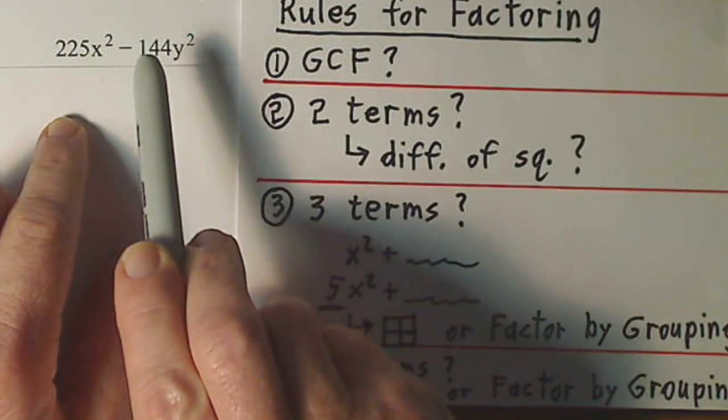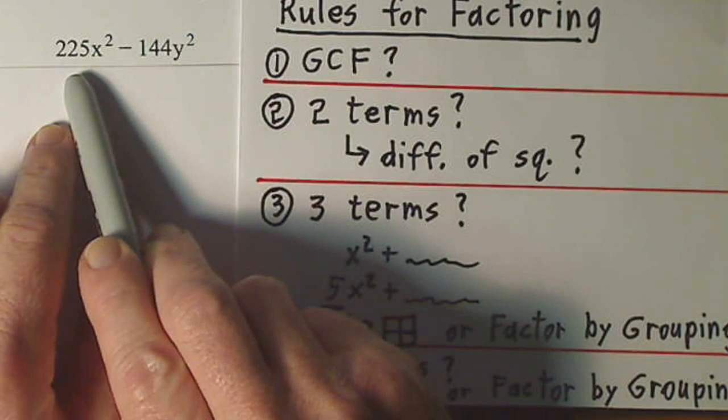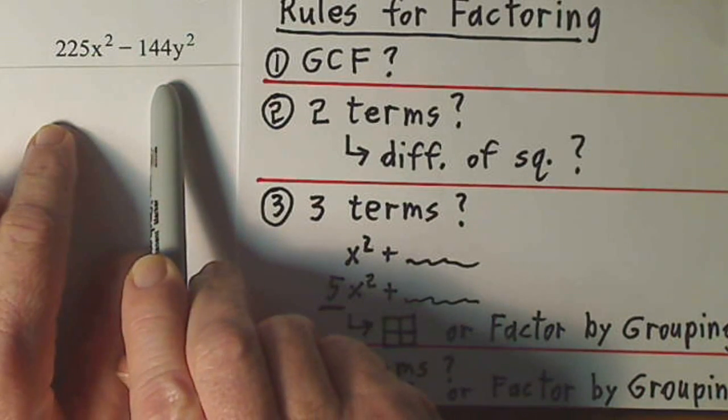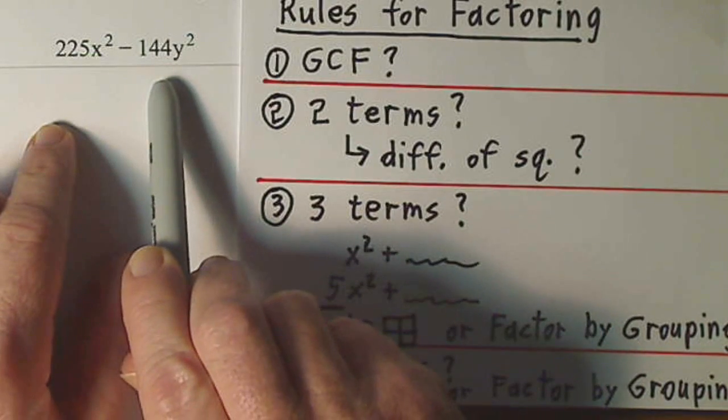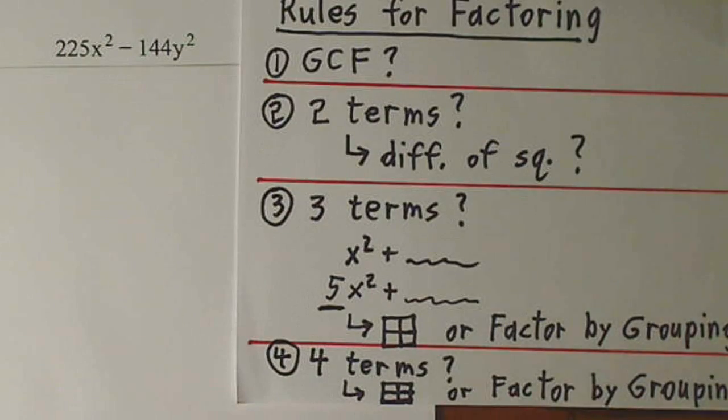It's a difference, and you might not recognize 225x squared as a perfect square, but I hope you recognize 144y squared as a perfect square. The square root of that would be 12y, so it's worth investigating the 225.